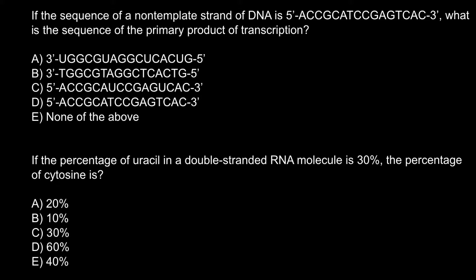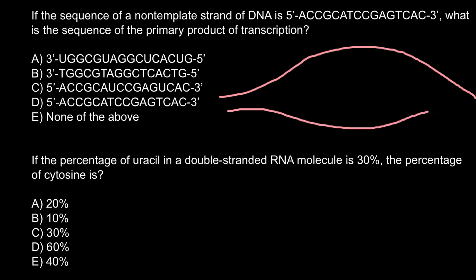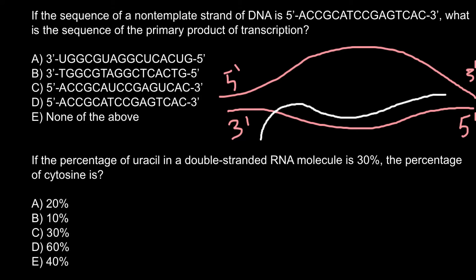Imagine that this is a transcription bubble. Here we have two strands of the DNA. For example, if this top strand is 3' here and 5' here, the other strand of the DNA would be 5' here and 3' here. And of course, the new messenger RNA to be produced would also be 5' here and 3' here.